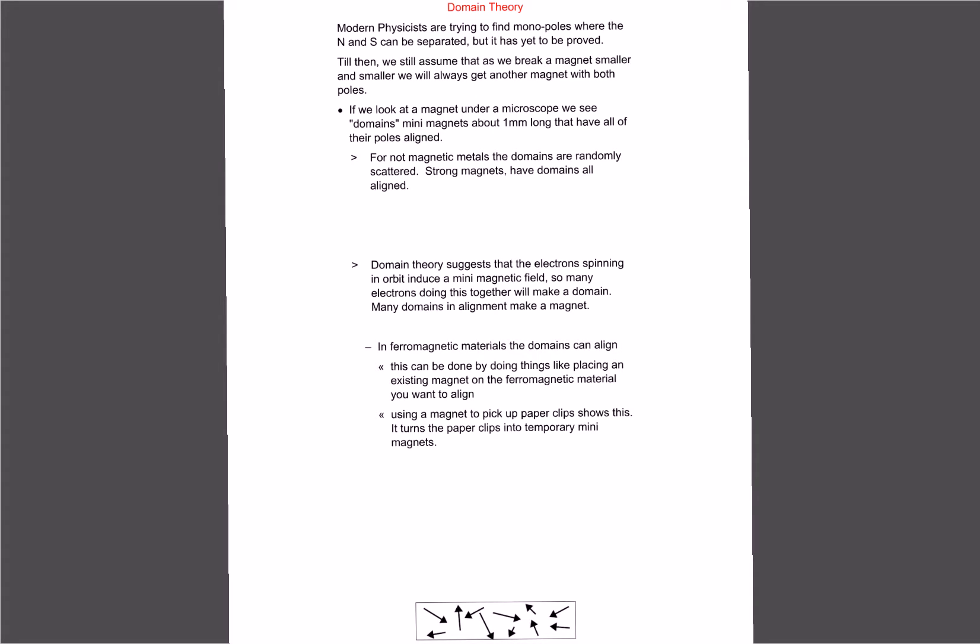Okay, before we start looking at magnetic fields and directions and calculations, we have a little bit more theory. We're going to talk about a theory called domain theory. Most modern physicists, and I've seen it on Big Bang Theory, say they're trying to find a monopole or separate the north and south pole and only have one of them, but that is yet to be proved.